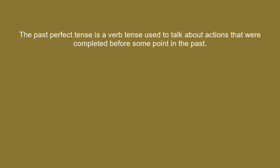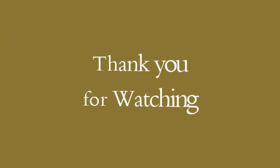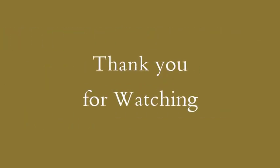Quick recap of what we have done today. Past perfect is a verb tense used to talk about actions that were completed before some point in the past. How to form it: the past perfect is formed using had plus past participle. Past perfect is used in the part of the sentence that explains the condition — the if-clause. Thank you for watching.